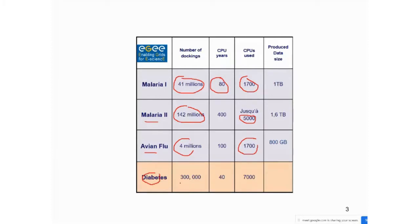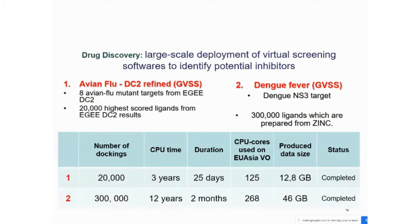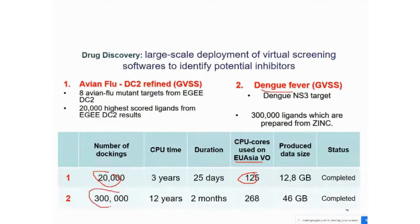Certain biological and other problems that need to be computationally solved require sophisticated systems — that is why parallel computing and supercomputing evolved. For avian flu, another instance used 20,000 dockings with 125 CPU cores from EU/Asia VO courses and they were able to complete it. Similarly for dengue fever, around 3 lakh dockings were needed and they used 268 CPU cores trying to find the drug. That is one side of the scenario.